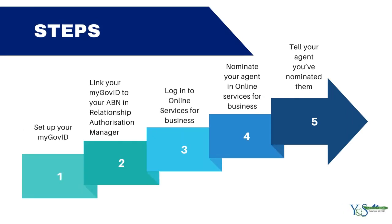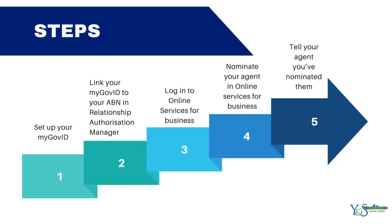There are five steps you need to follow. One: set up your MyGovID. Two: link your MyGovID to your ABN in Relationship Authorization Manager. Three: log in to Online Services for Business. Four: nominate your agent in Online Services for Business. And five: tell your agent you have nominated them.